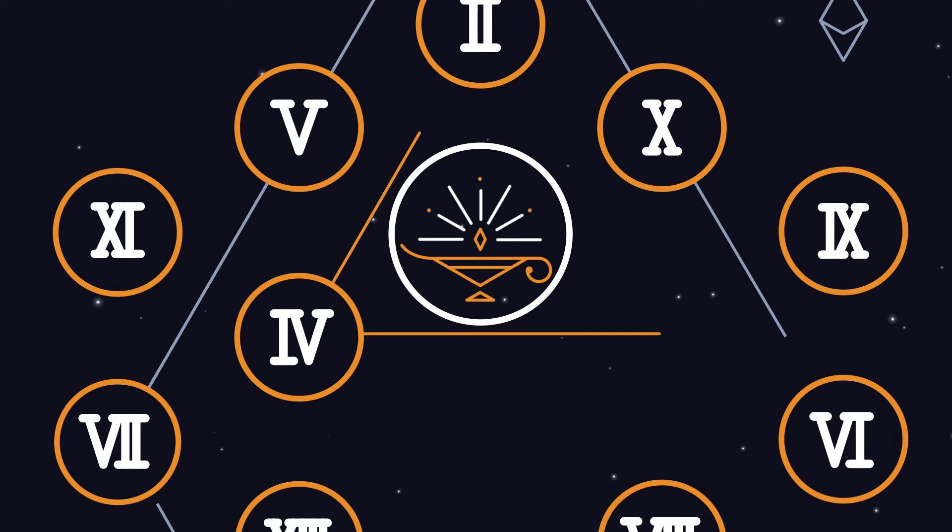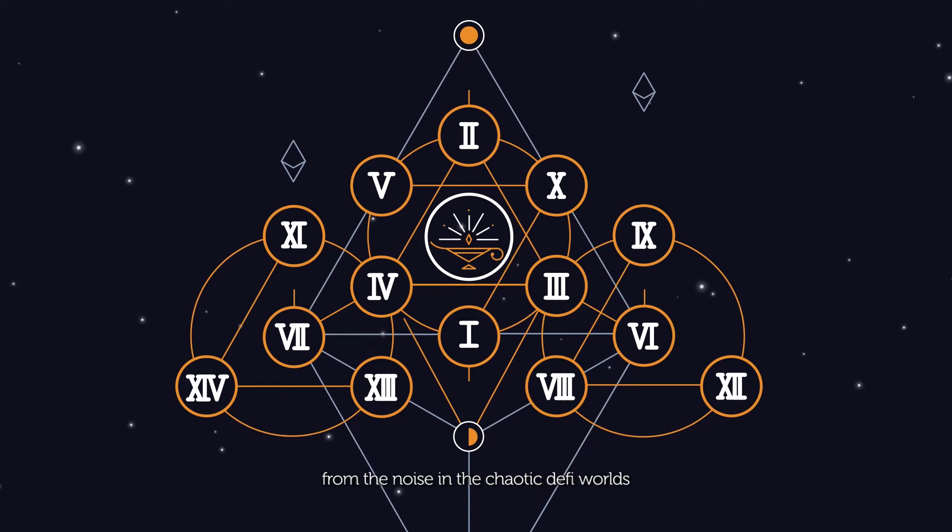Aladdin DAO is a yield farming curation service governed by a DAO. We are a group of DeFi veterans who want to filter the signal from the noise in the chaotic DeFi world.